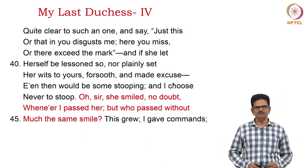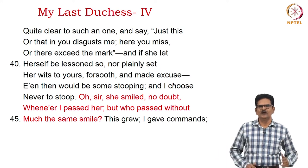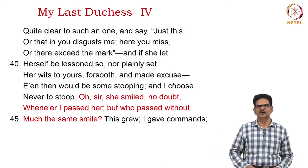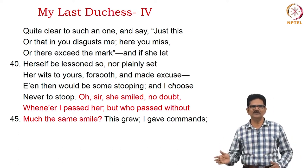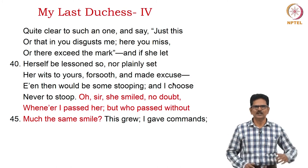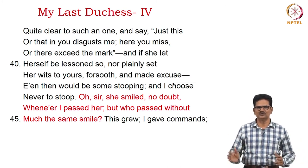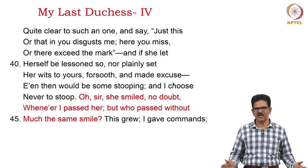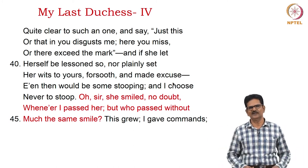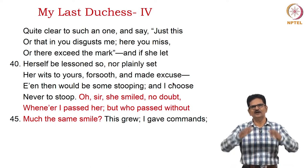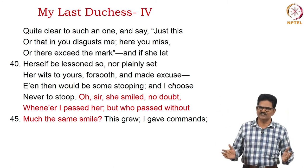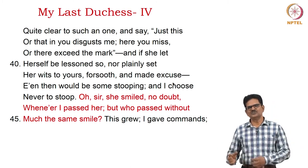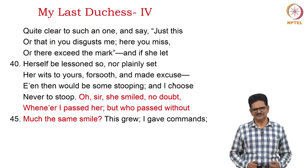The second extract: 'Quite clear to such an one, and say, Just this or that in you disgusts me, here you miss or there exceed the mark. And if she let herself be lessoned so, nor plainly set her wits to yours, forsooth, and made excuse, even then would be some stooping, and I choose never to stoop. Oh sir, she smiled, no doubt, whenever I passed her, but who passed without much the same smile? This grew; I gave commands.' The duke had killed his duchess, had her painted, and now shows this painting to the envoy who has come to negotiate a new wedding for the duke.